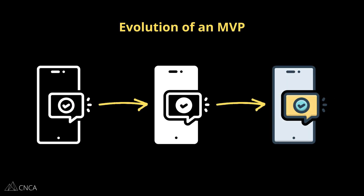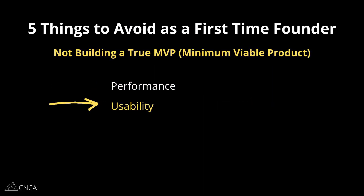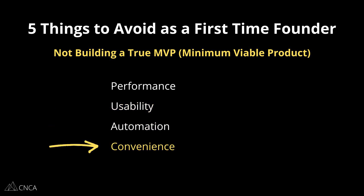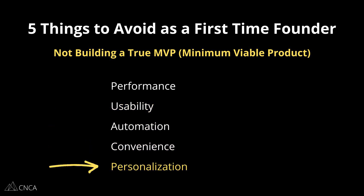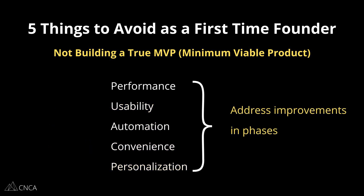Approach your app the same way. Your iterations don't need to tackle everything all at once. Think about things like performance, usability, automation, convenience, and personalization as separate goals when addressing improvements. You may be surprised how much one may influence another.